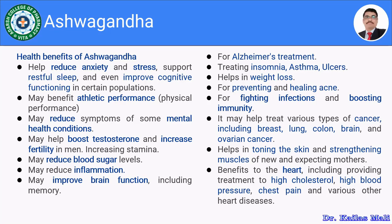Ashwagandha is used for fighting infections and boosting immunity. It may help treat various types of cancer including breast, lung, colon, brain, and ovarian cancer. When used topically, Ashwagandha tones the skin and strengthens the muscles of new and expecting mothers. It also shows beneficial effects on the heart, including treatment of high cholesterol, reducing blood pressure, reducing chest pain, and helping with various other heart diseases.